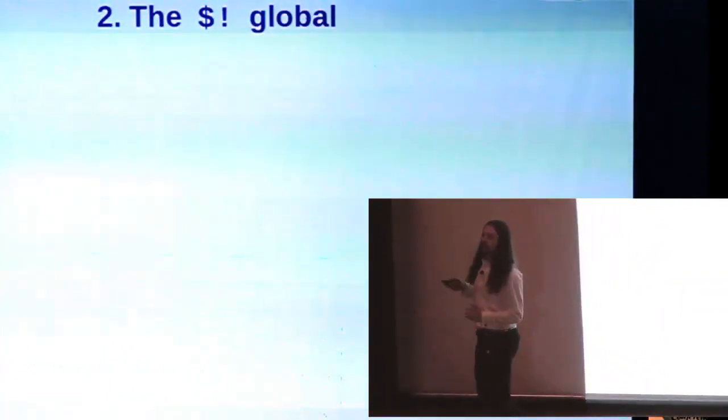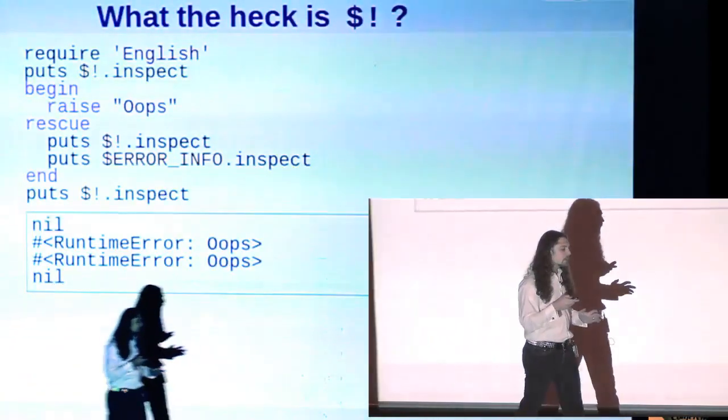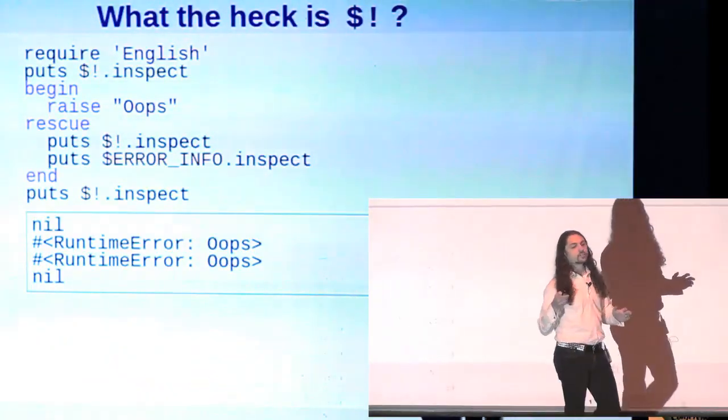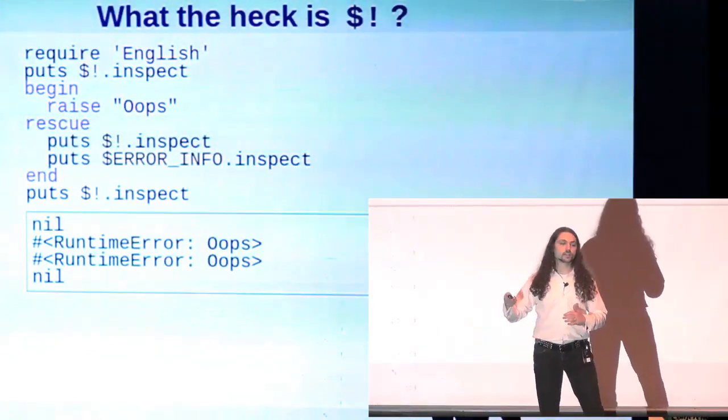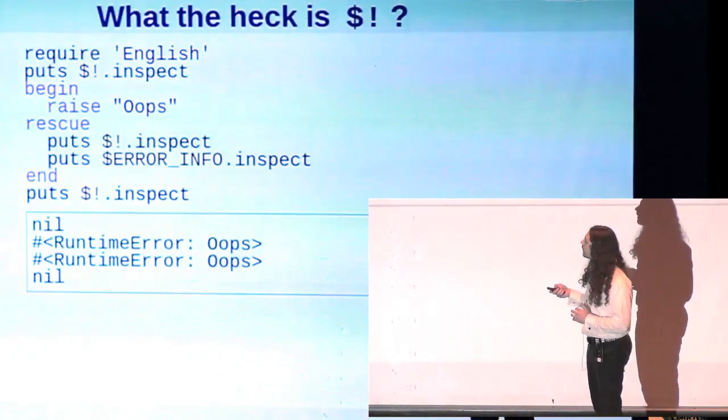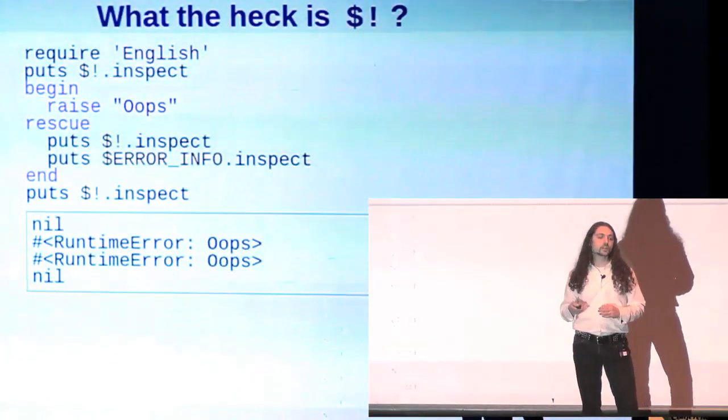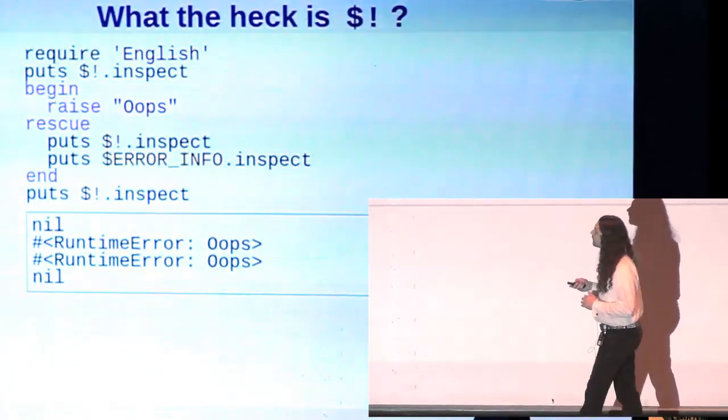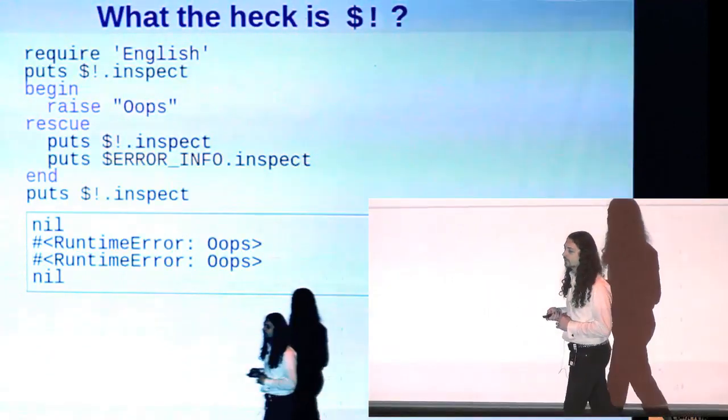The dollar bang global variable. What the heck is the dollar bang variable? Well, this is a global that Ruby keeps, and it always contains a reference to the exception that is currently being raised, currently being handled, and if there is no exception being raised, then it is nil. It is also known by the alias error info if you include, or if you require the English module.